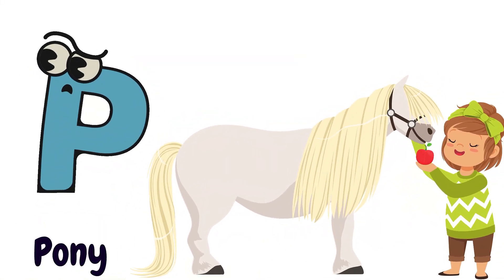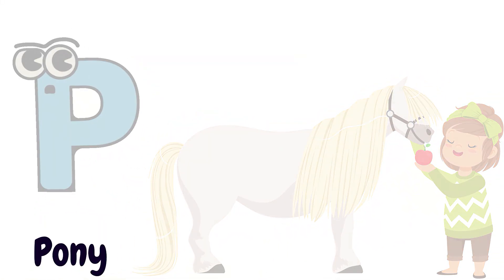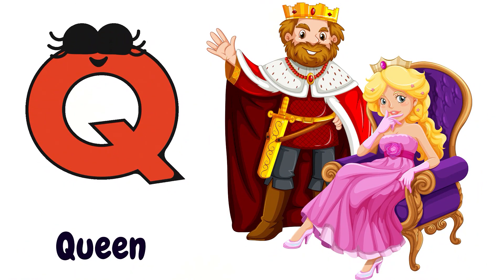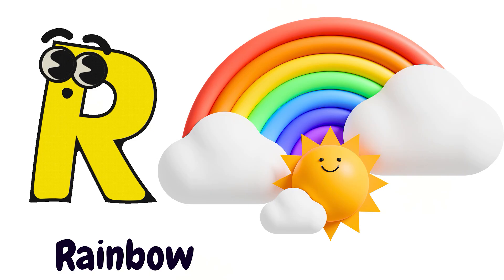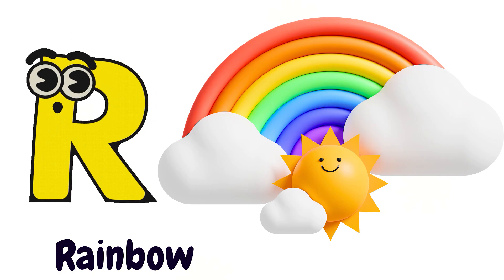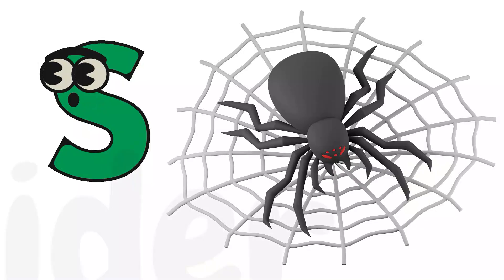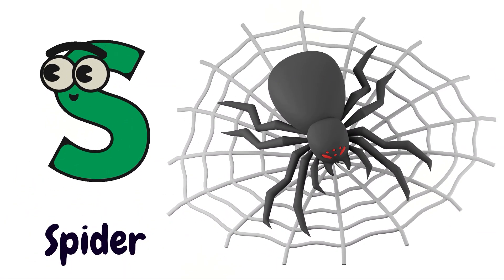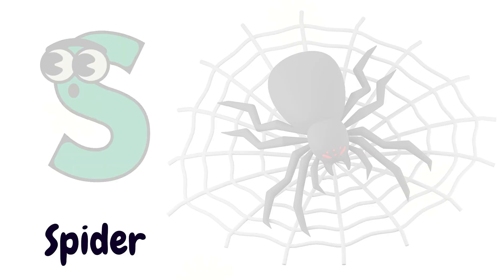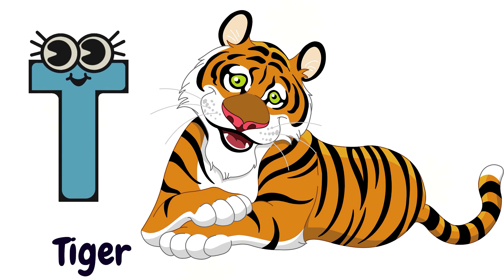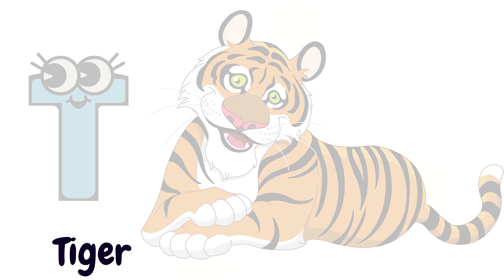P is for Pony. P, P, P, P, Pony. Q is for Queen. K, K, K, K, Queen. R is for Rainbow. R, R, R, R, Rainbow. S is for Spider. S, S, S, S, Spider. T is for Tiger. T, T, T, T, Tiger.